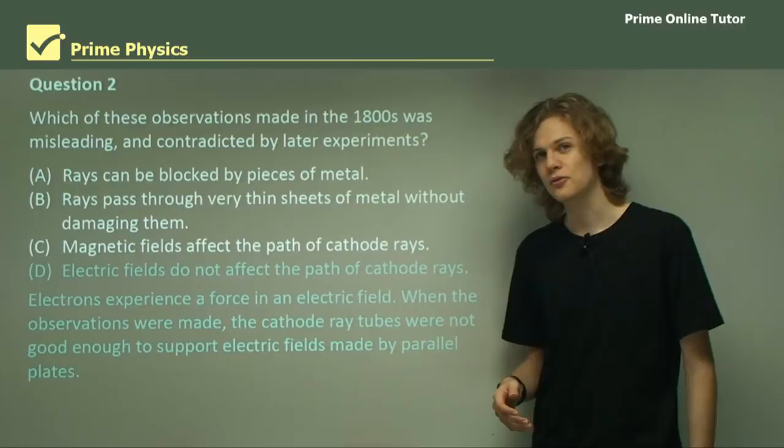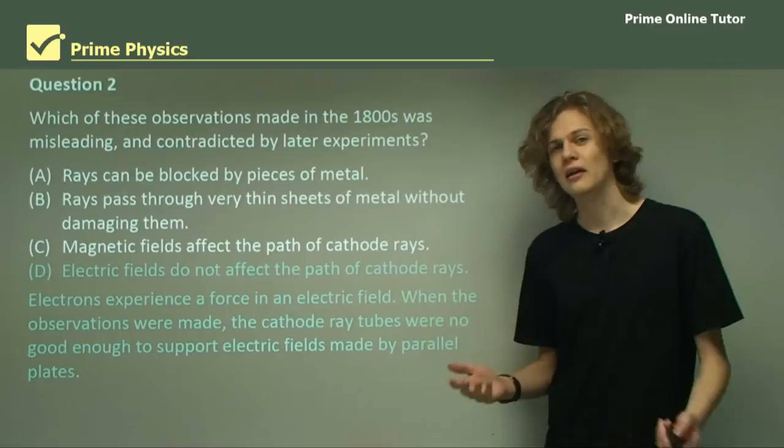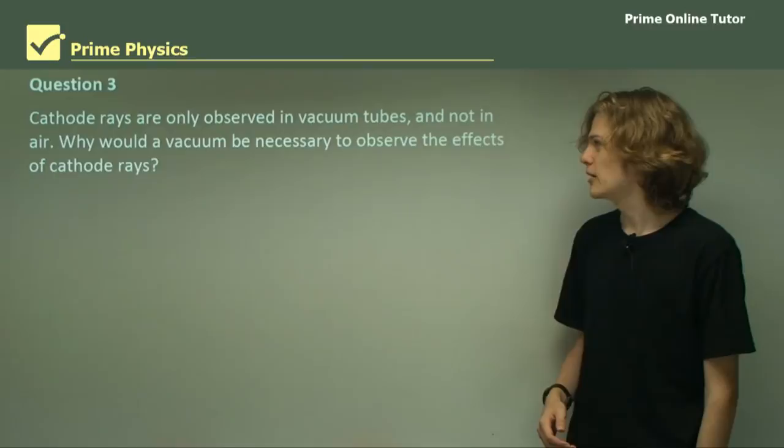So then we have D. Electric fields do not affect the path of cathode rays. This was in fact a misleading observation because we know that charged particles are affected by strong electric fields. The reason for this lack of a deflection by electric fields we'll learn about later on. This is the correct answer, D.